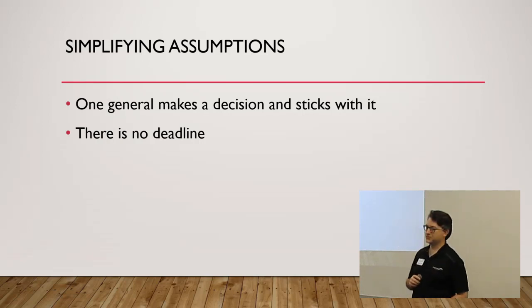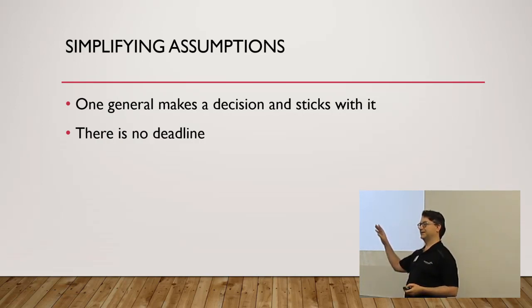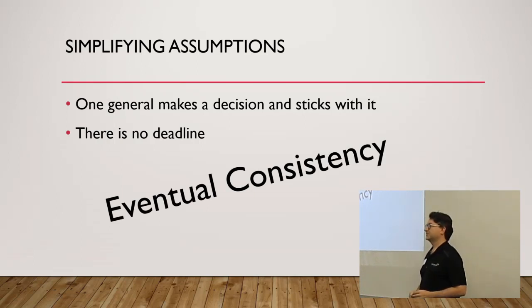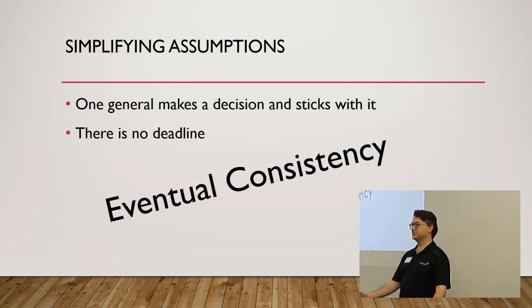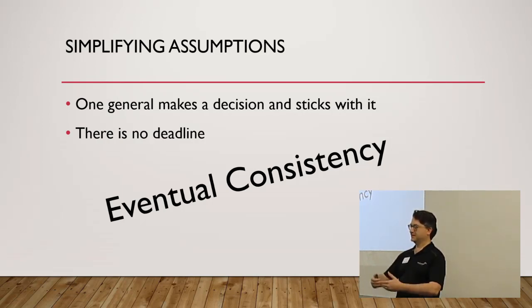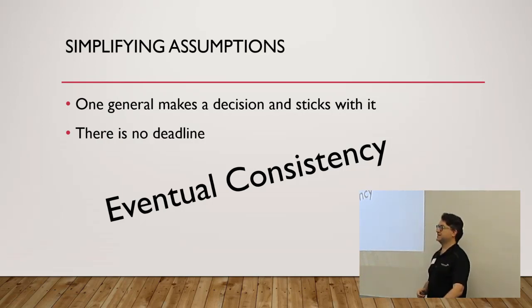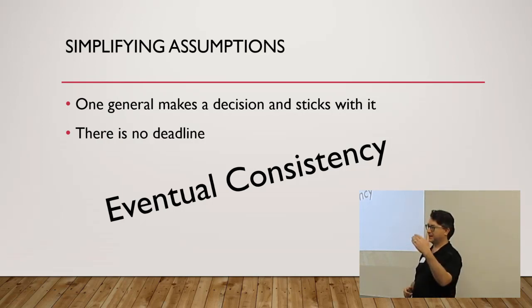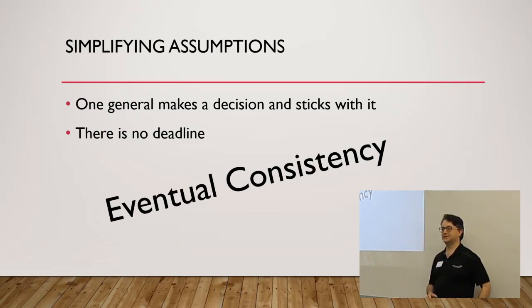These simplifying assumptions were what allowed us to relax the problem so we weren't demanding all three properties simultaneously. And these simplifying assumptions go by another name: eventual consistency. We allow for some period of time for different nodes in our system to be inconsistent, in a different state — as long as we know that eventually, given no deadline, time will pass and they will reach a consistent state. In the meantime, one has decided its state and other nodes are not there yet. Allow that inconsistency with no deadline — that's eventual consistency.